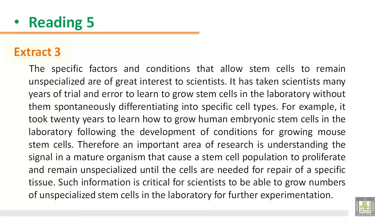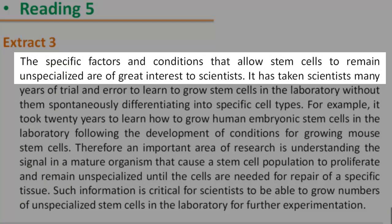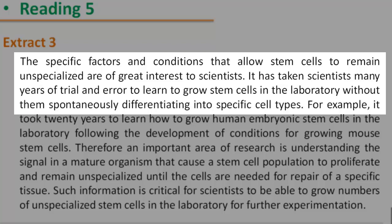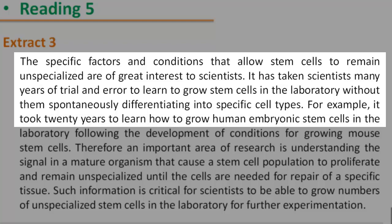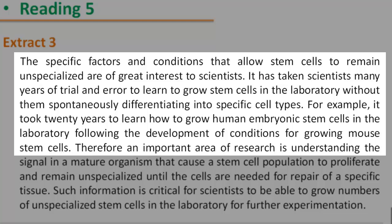Reading 5, Extract 3. The specific factors and conditions that allow stem cells to remain unspecialized are of great interest to scientists. It has taken scientists many years of trial and error to learn to grow stem cells in the laboratory without them spontaneously differentiating into specific cell types. For example, it took 20 years to learn how to grow human embryonic stem cells in the laboratory following the development of conditions for growing mouse stem cells.